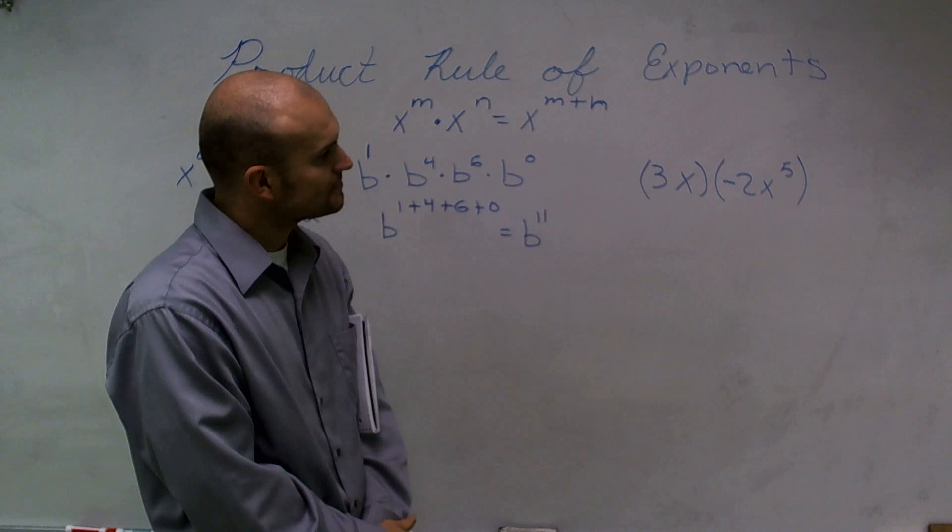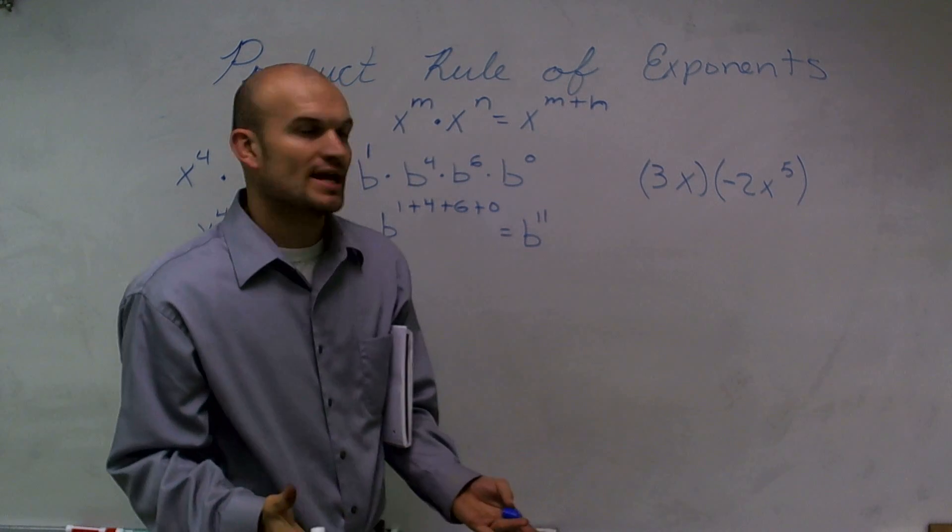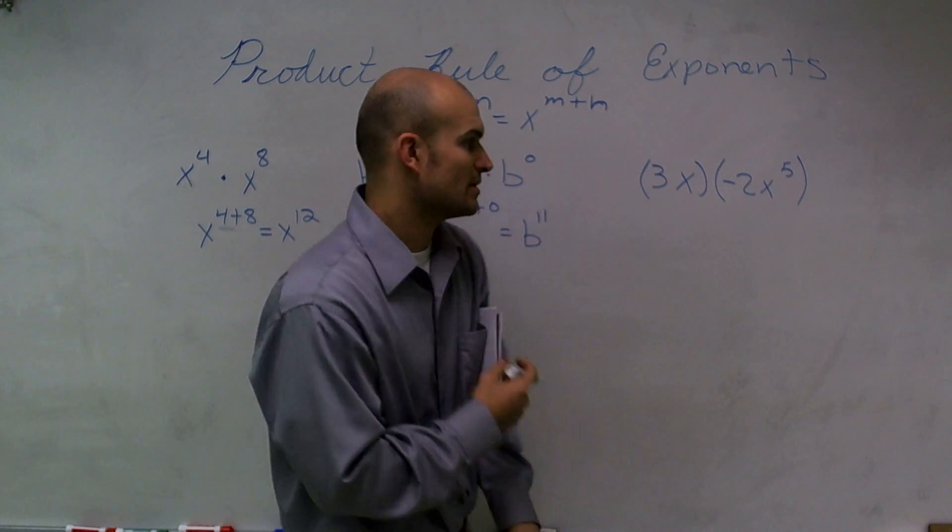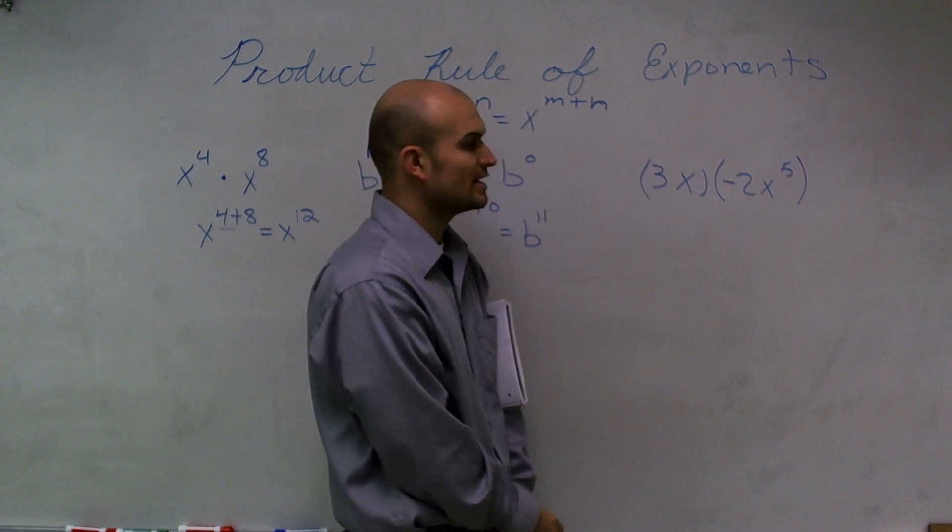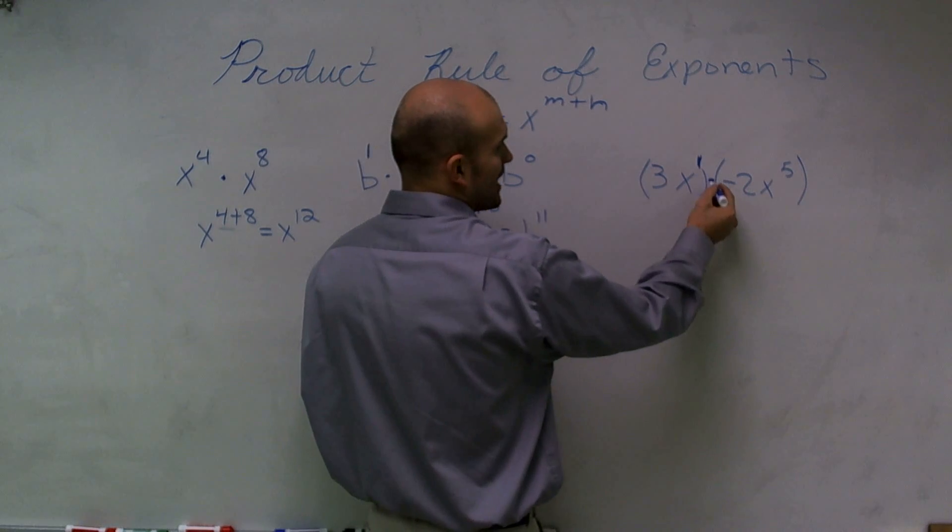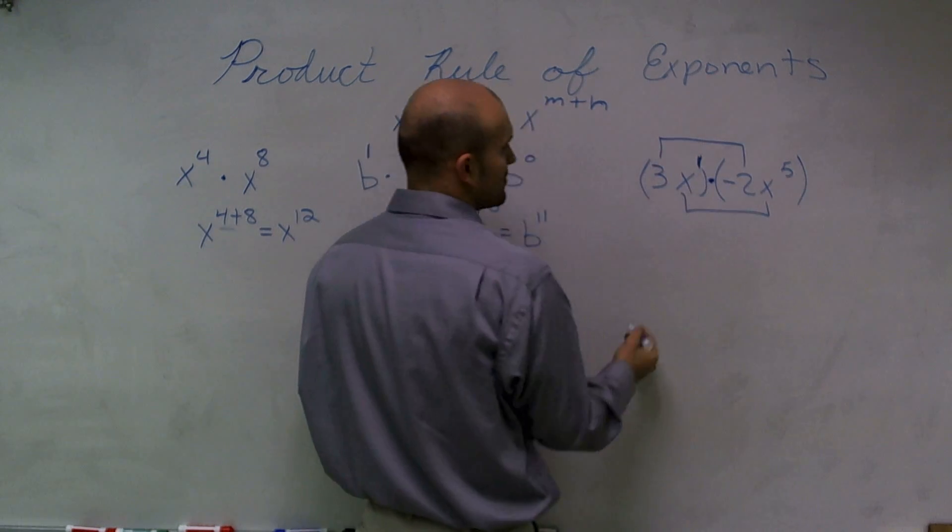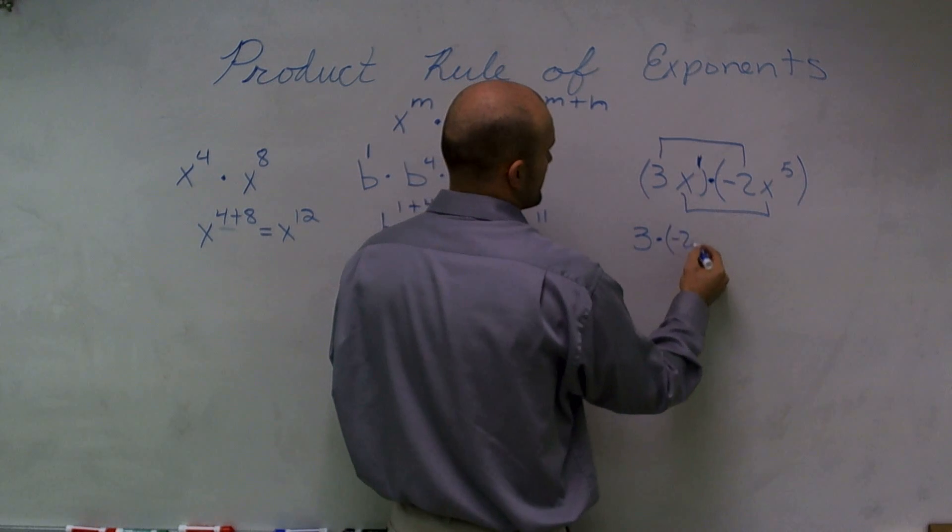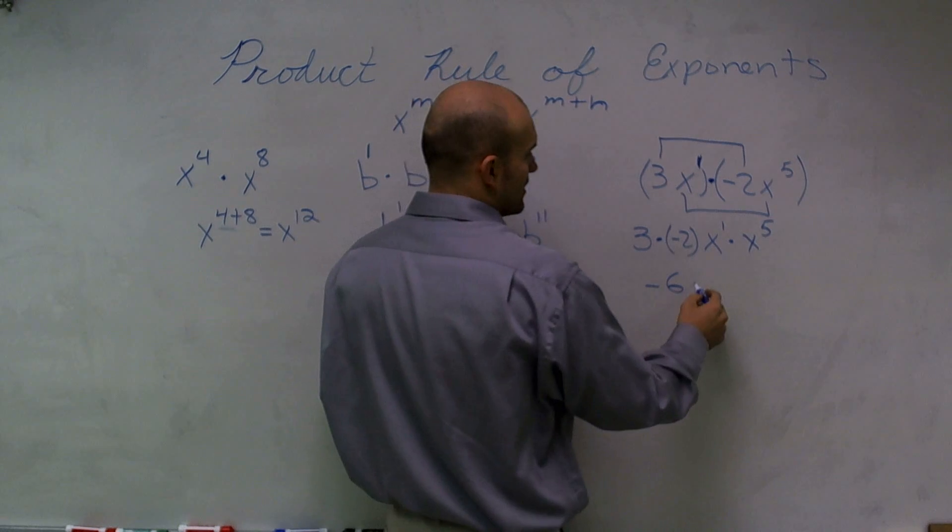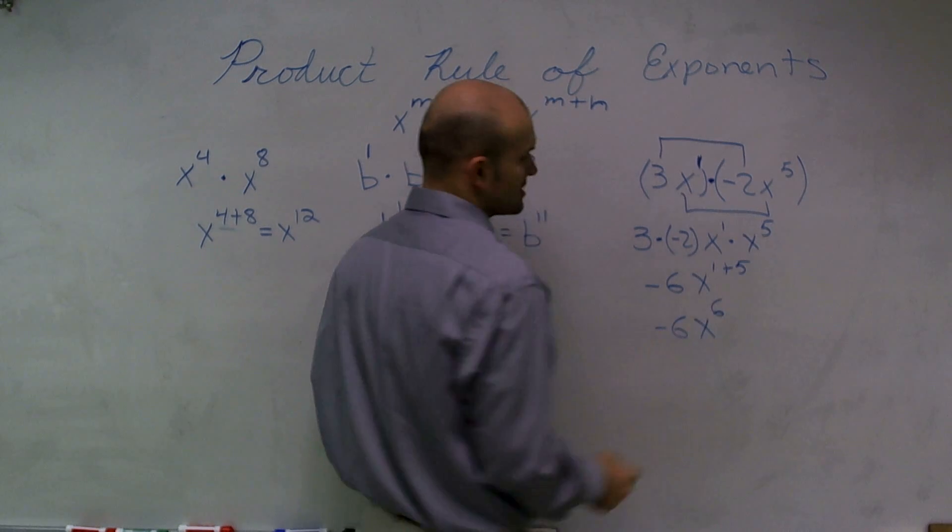And finally, the last thing we need to look at is now we're going to have some coefficients in front of our variables. And that's really not going to change our product rule of exponents. Still, even though we have these coefficients, we can only touch what we have with our exponents. Now, I'm not just showing you an exponent up here, so I'm going to want to put a 1 up there. So now, once I put a 1 up there, I can say, well, since we're multiplying here, my operation between my parentheses is multiplication, I need to make sure I multiply my coefficients and I multiply my exponents. So I'll have 3 times negative 2, and then I'll have x to the first times x to the fifth. Well, 3 times negative 2 is a negative 6, and then here I have x to the 1 plus 5, which equals negative 6 raised to the x to the sixth power.